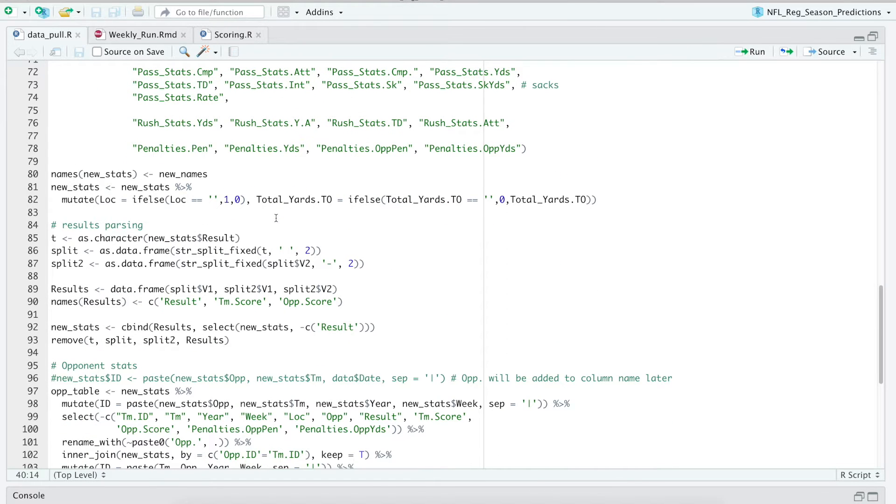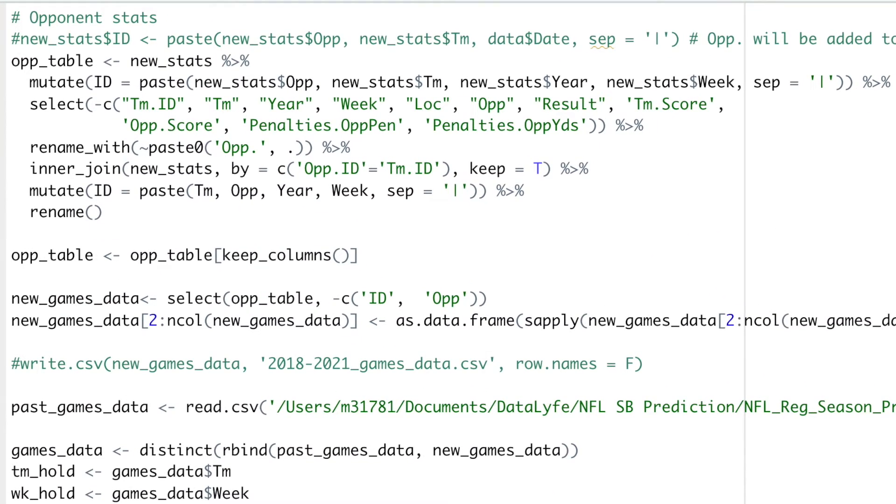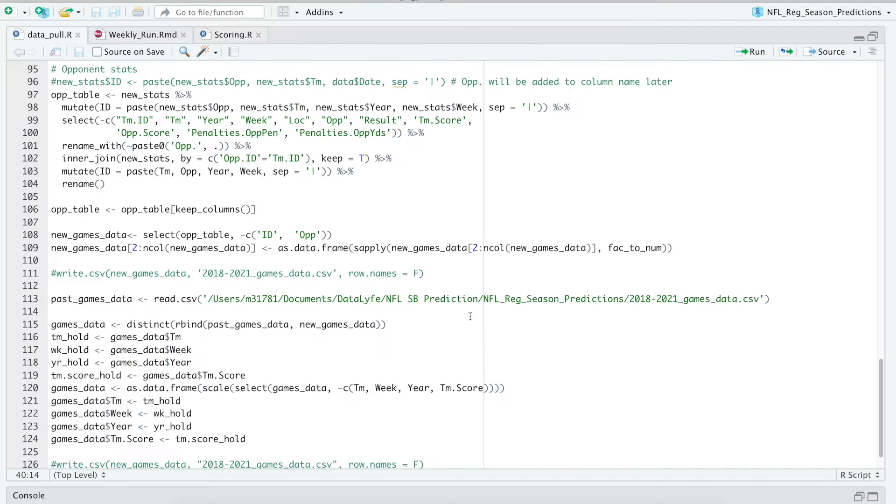Then I created the opponent table. What this table has is all the data you just saw, but every observation also has the data from the opponent for that game that was played. This ensures that the data we have really shows the head-to-head matchup and has the data for both teams for each game.